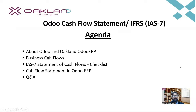In this webinar we will start by getting to know about Odoo and Auckland Odoo ERP. Next is to know about the business cash flows, and then we will look into IAS 7, which is the statement of cash flows. After that we will see the cash flow statement in Odoo ERP, and at the end we will have a Q&A session.